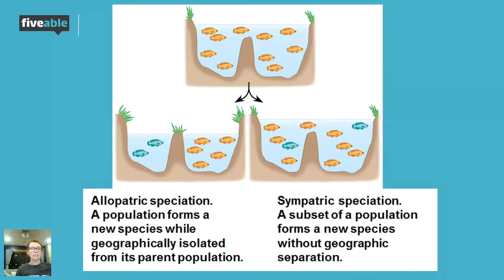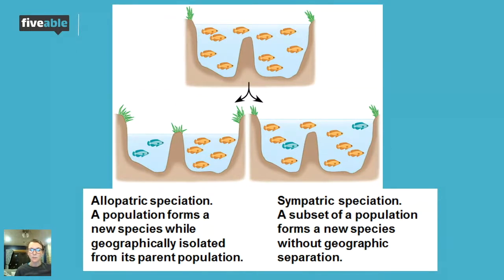On the right-hand side we have sympatric — you can think sympatric same speciation — where we have a subset of a population forming new species without geographic separation. These fish are still able to mingle with each other, but somehow we have to isolate them reproductively and cut off the gene flow between the two populations in order to successfully get two new species out of a group that's chilling together. I'll tell you a couple of different ways we can actually stop gene flow in sympatric populations.